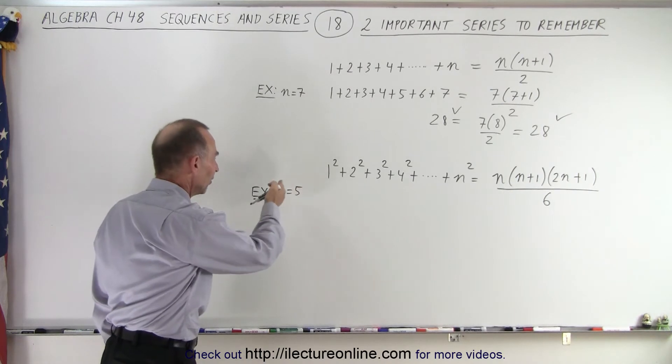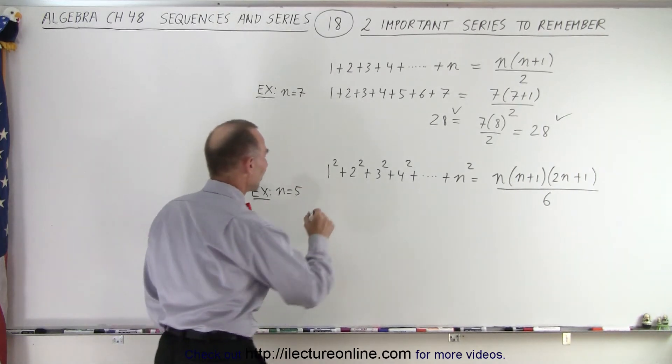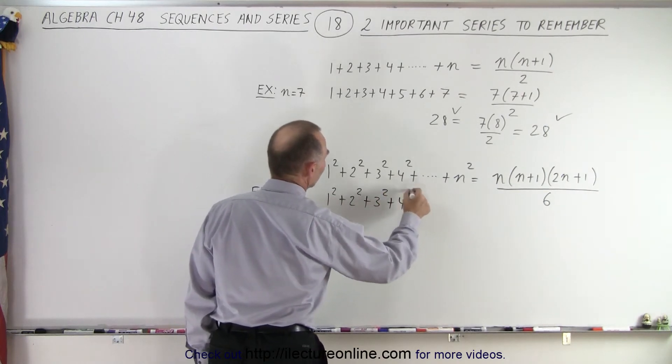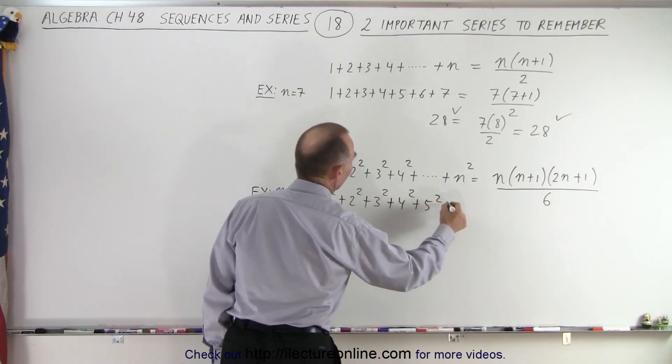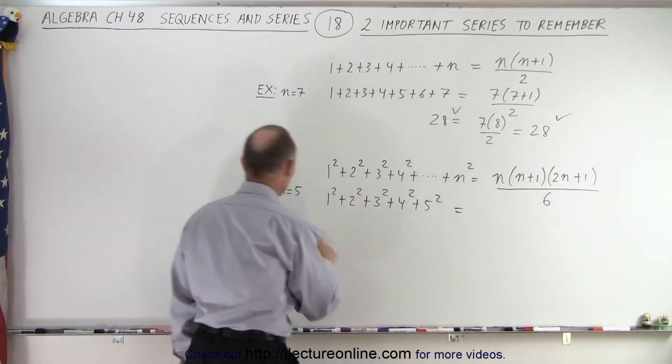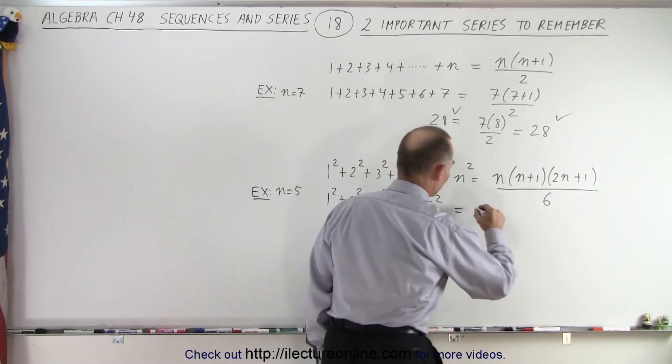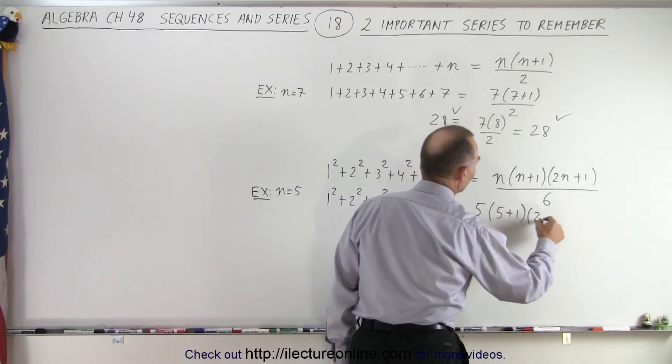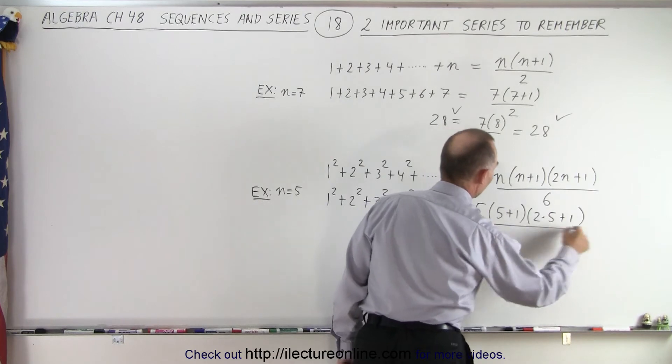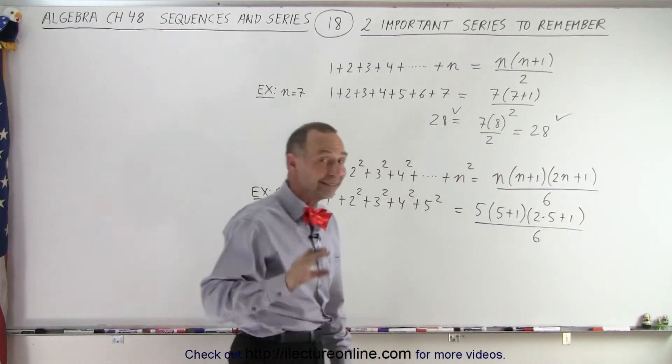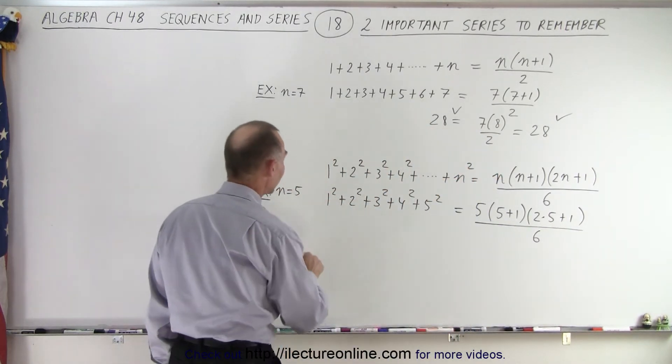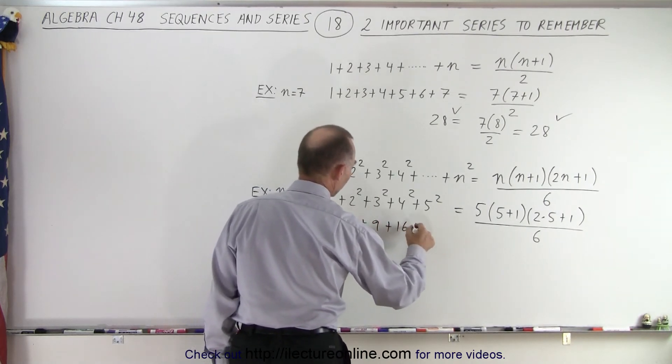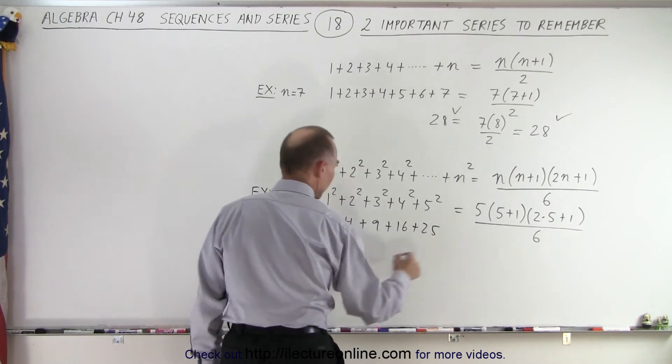Here let's try this with n equals 5. So here we have 1 squared plus 2 squared plus 3 squared plus 4 squared plus 5 squared. And that should equal the right side when n is replaced by 5. So this should equal 5 times 5 plus 1 times 2 times 5 plus 1 all divided by 6. Let's see if that's indeed the case. On the left side, this is 1 plus 4 plus 9 plus 16 plus 25 equals...